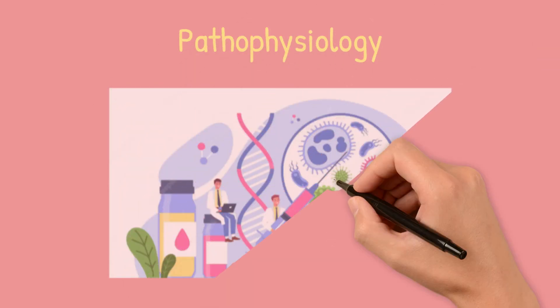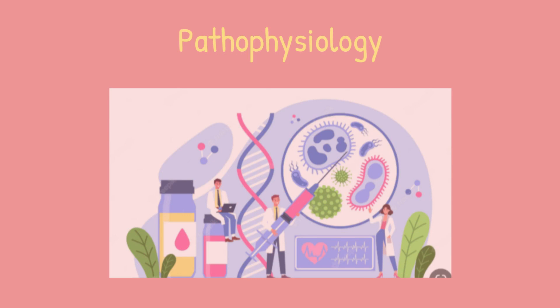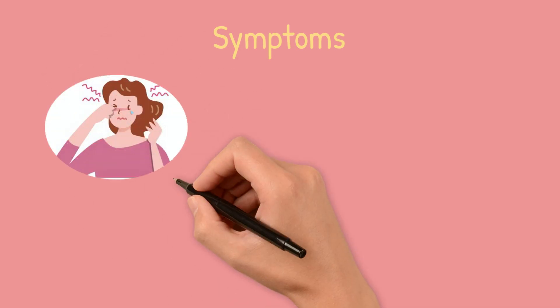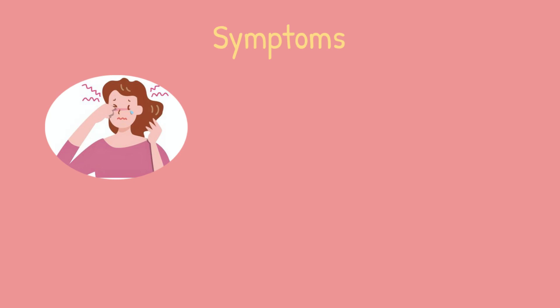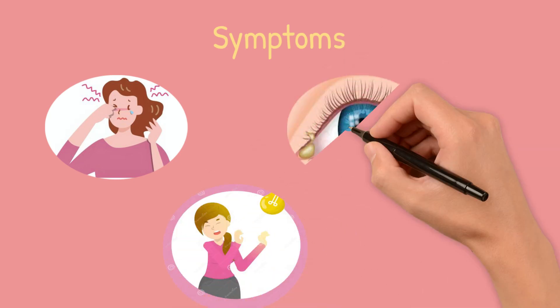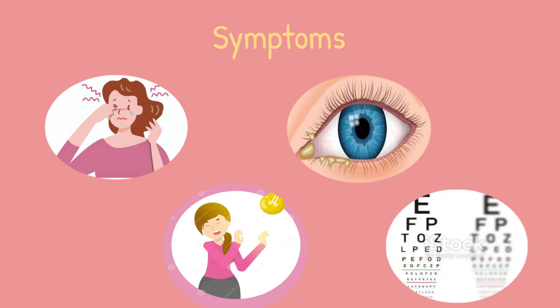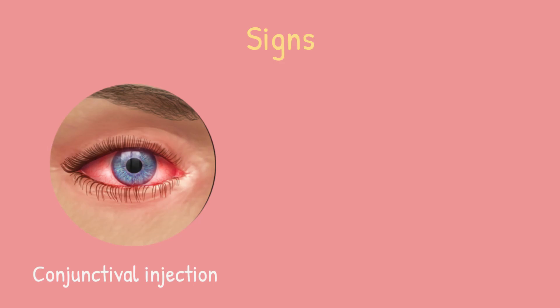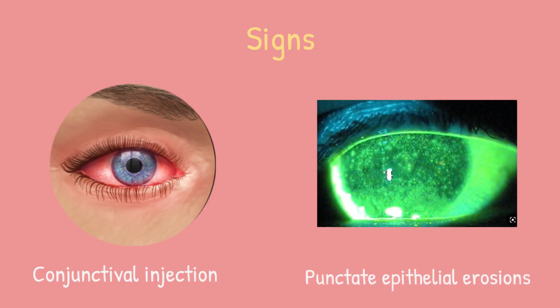Both vernal and atopic keratoconjunctivitis share the same pathogenesis, which is a combination of IgE and lymphocyte-mediated hypersensitivity reactions. Symptoms of both diseases consist of severe itching, foreign body sensation, tearing, photophobia, mucus discharge, and blurring of vision. They also share common signs including diffuse conjunctival injection and punctate epithelial erosions.